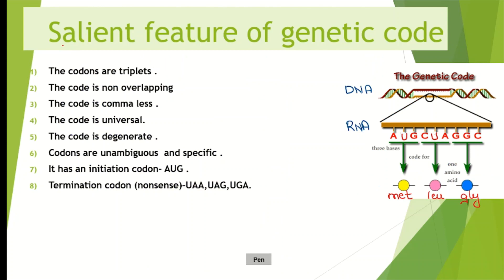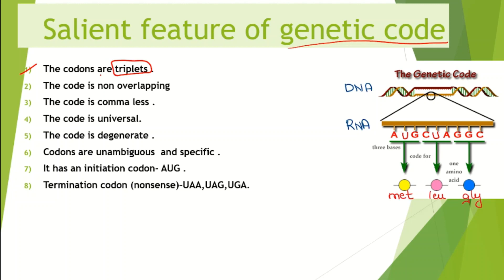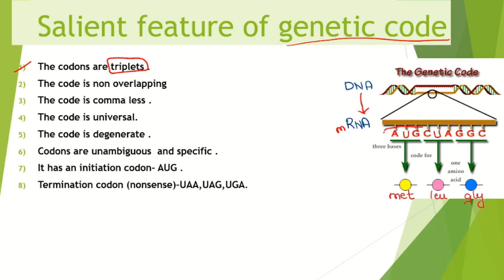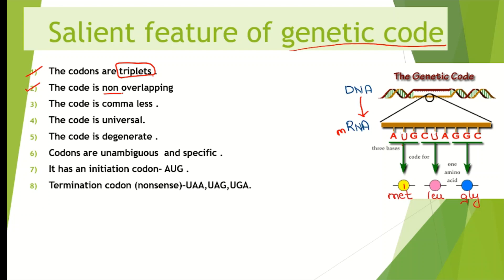Now let us discuss the salient features of genetic codes one by one. The first is that codons are triplets — codons are always in triplet form, meaning the nitrogen base sequences in mRNA are in sets of three, making one codon, and one codon codes for one particular amino acid. The second feature is the code is non-overlapping — adjacent codons never overlap, and one base can only be part of one codon; it can never become part of the next codon. The third point is the code is comma-less — there is no gap or marks between nucleotides; there is no room for a comma or any other marks between these nucleotide sequences.